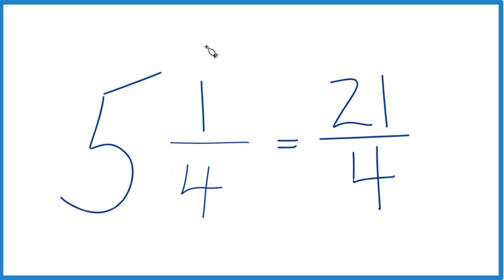And the mixed number, 5 and 1 fourth, that equals the improper fraction, 21 fourths.